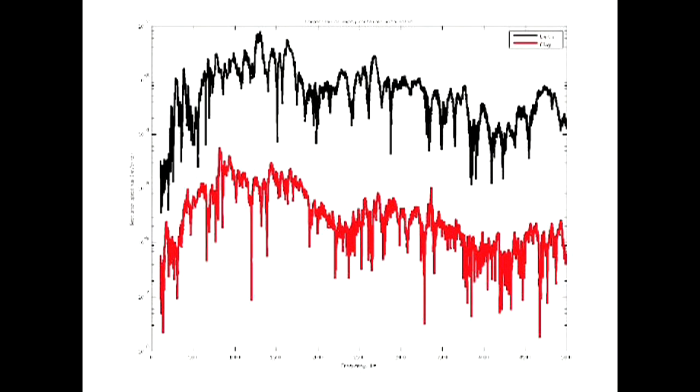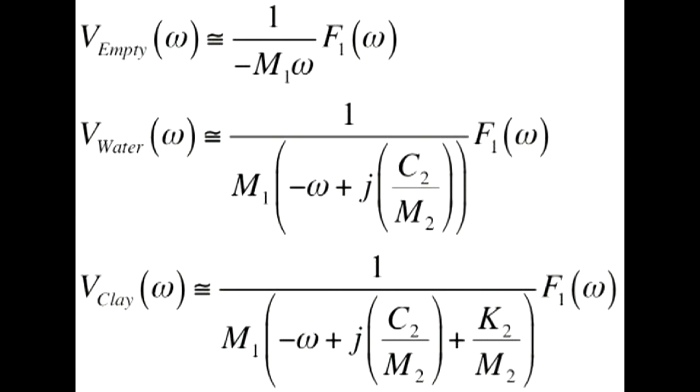Here are the two curves corresponding to the container again, empty and one container containing the clay-like substance. Once again, the spectrum for the container with clay is much lower in amplitude than the empty container.